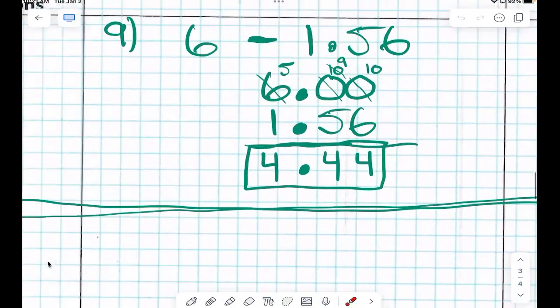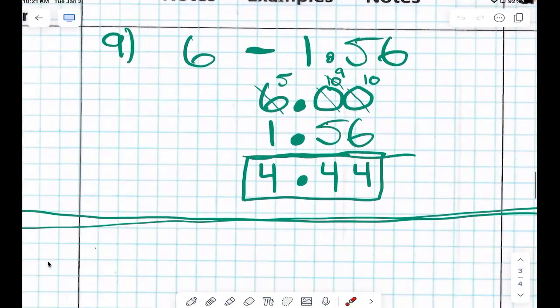So then if you had to solve a problem like 6 minus 1 and 56 hundredths, I wrote my number 6. And I wrote 1 and 56 hundredths, but I don't have a decimal point. That 6 doesn't have a decimal point, does it? It has an invisible one unless we make it visible. So I can make it visible now, right? So now I can write my 1.56 with my decimal points lined up.